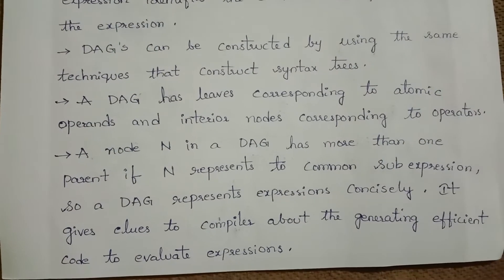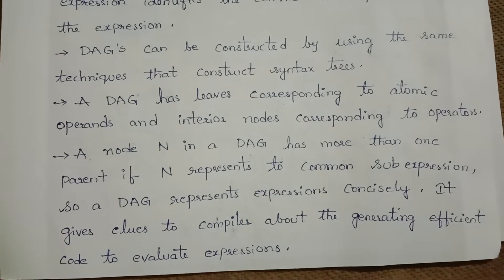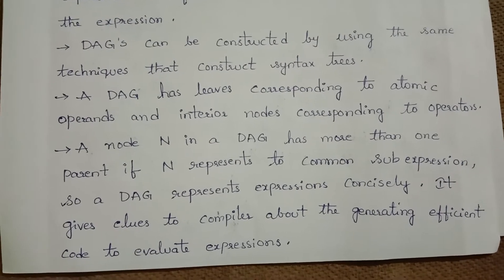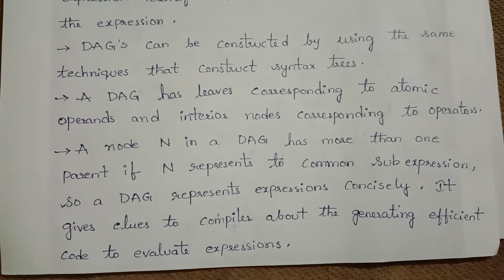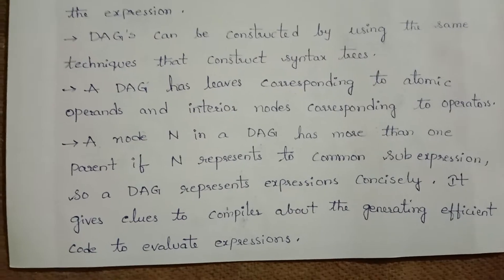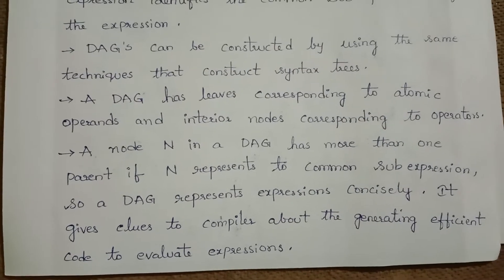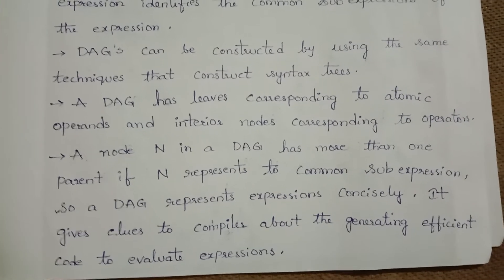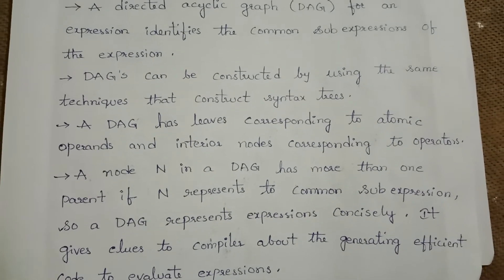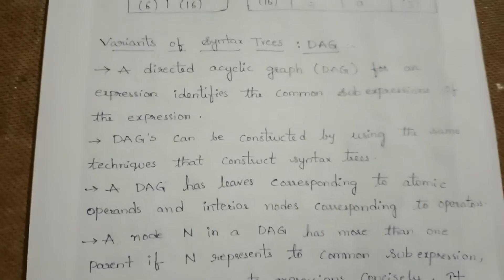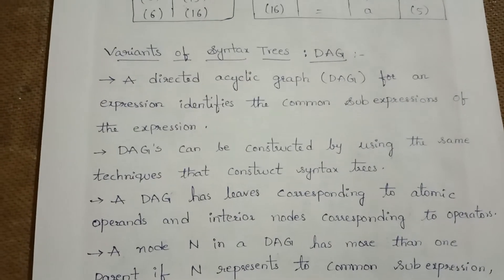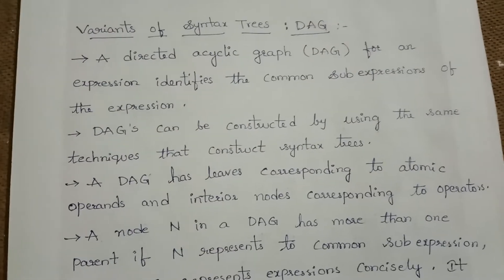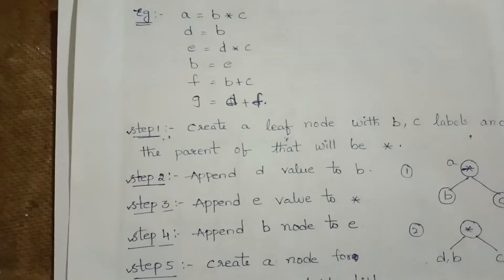If node N represents a common sub-expression, a DAG represents expressions concisely. It gives clues to the compiler about generating efficient code to evaluate expressions. So the directed acyclic graph is one of the variants of the syntax tree.